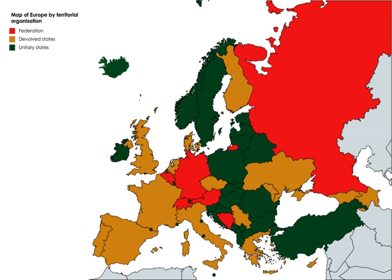In Europe, federalist is sometimes used to describe those who favor a common federal government, with distributed power at regional, national and supranational levels. Most European federalists want this development to continue within the European Union. European federalism originated in post-war Europe; one of the more important initiatives was Winston Churchill's speech in Zurich in 1946. In the United States, federalism originally referred to belief in a stronger central government. When the U.S. Constitution was being drafted, the Federalist Party supported a stronger central government, while anti-federalists wanted a weaker central government.